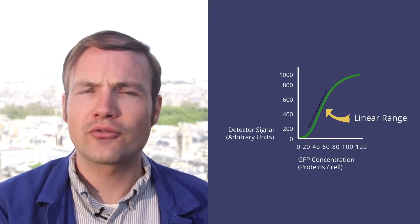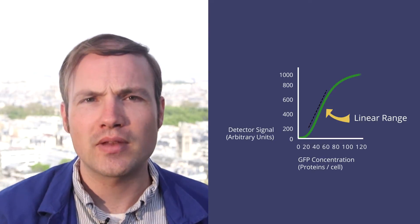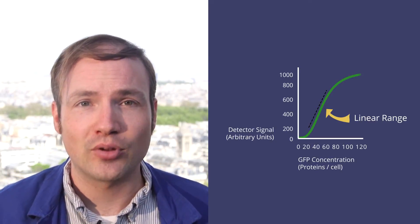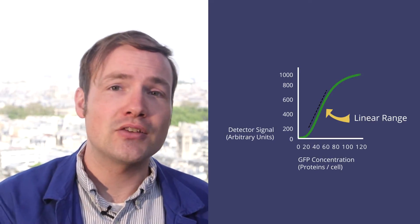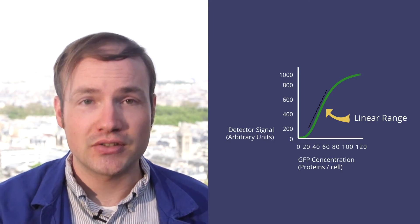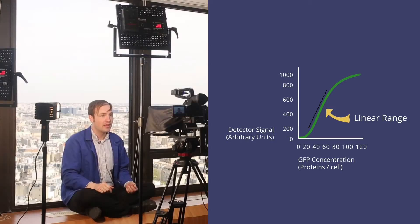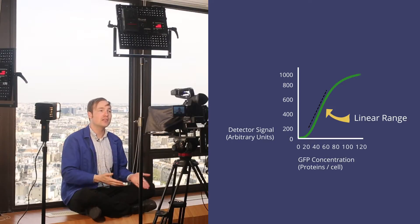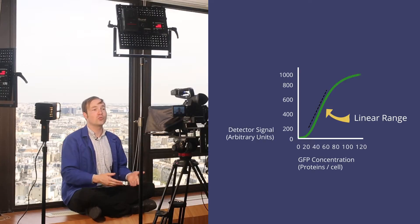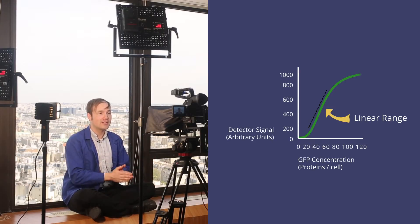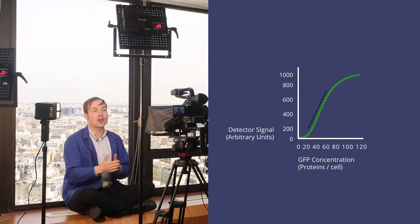We call this sweet spot the linear range, and we'll want to know it for almost any equipment we use to make measurements. For a fluorometer, we can find this range by loading a standard fluorescent molecule at known concentrations. Eventually, doubling the concentration of the molecule will stop doubling the fluorescence readings. That's how we know we've left the linear range, and that comparisons using arbitrary units are no longer valid.